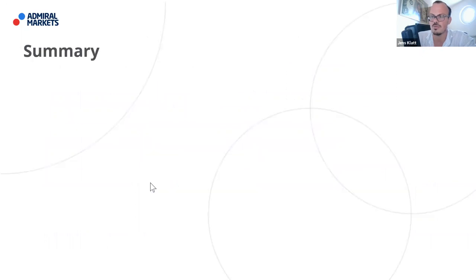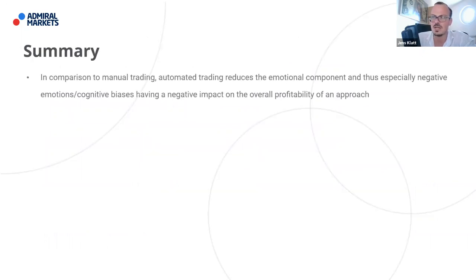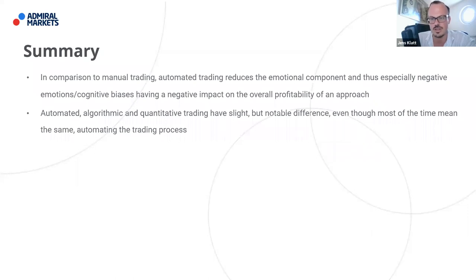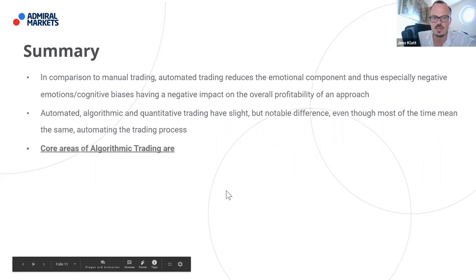To sum up: compared to manual trading, automated trading reduces the emotional component — especially the negative emotions, cognitive biases, loss aversion, and bandwagon effect — and thus reduces their negative impact on overall profitability. Automated, algorithmic, and quantitative trading have slight but notable differences, though most people mean the same thing when they use these terms. When you read about quant trading or algo trading, someone usually refers to an automation of the trading process.